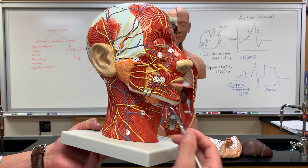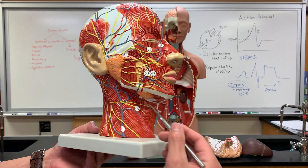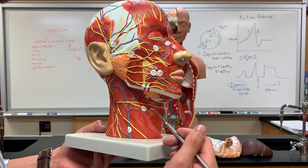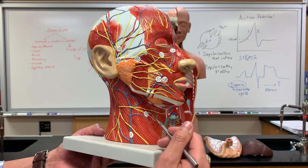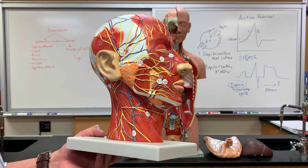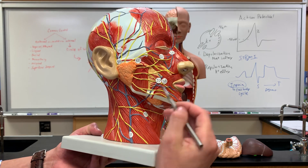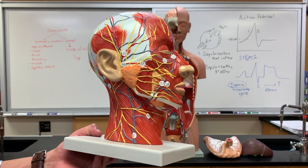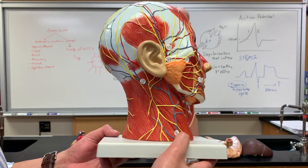Remember that this is the external carotid artery, number 65, so blood is coming upwards in this direction to get to the facial artery and then the other ones that I just went over.